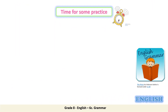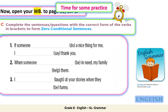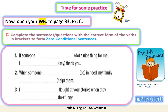Now it's time for some practice. Have a look at exercise C from your workbook page 83. Complete the sentences or questions with the correct form of the verbs in brackets to form zero conditional sentences. Remember, in order to form zero conditional sentences you need to put the verbs in the present simple. Now pause the video and solve the exercise.